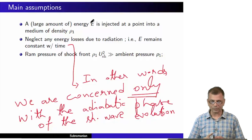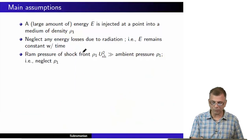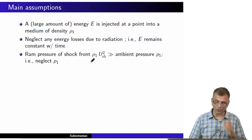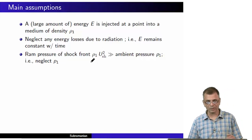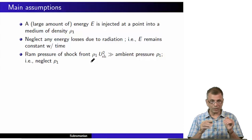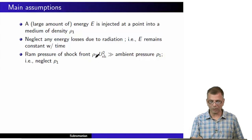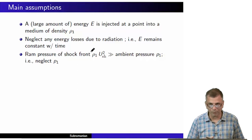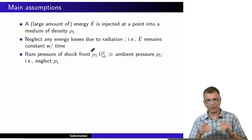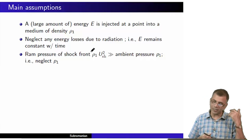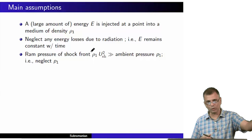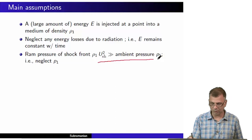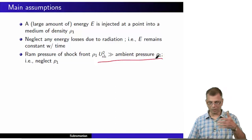The ram pressure of the shock front, ρ₁ U_shock², is much larger than the ambient pressure. It is almost as if there is a vacuum outside on the other side of the shock — you simply neglect the ambient pressure on the other side. It is the kinetic energy of the shock front which dominates.